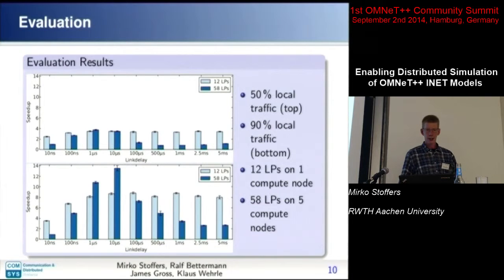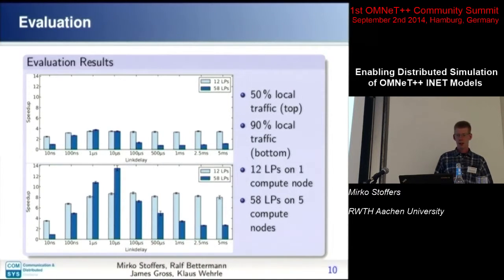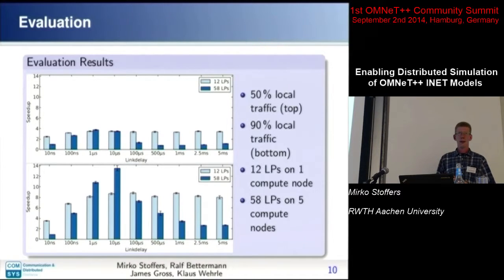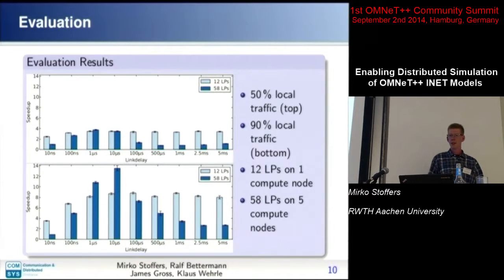We used different configurations. We varied the link delay between corporate LANs and the backbone — that's where the lookahead comes from; longer link delay means a greater parallelization window. We also varied the number of LPs: one configuration used a single computing node with 12 physical cores and 12 LPs (three to four local networks per LP), and another used five machines from a computing cluster with 12 cores each, giving 58 LPs, with each local network on its own LP and the backbone on another.